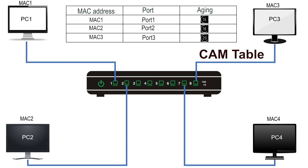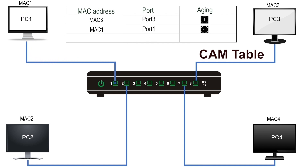Once the CAM table is full, the switch has no place to store any new addresses. Aging resolves this issue by automatically removing old entries from the CAM table. It keeps the MAC addresses of only those devices that are constantly sending frames. If any device is not sending frames and once the timer expires, it removes the MAC address of that device from the CAM table. Only the devices constantly sending frames remain in the CAM table.